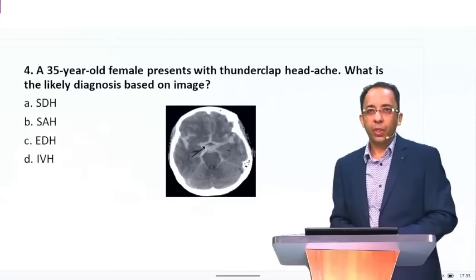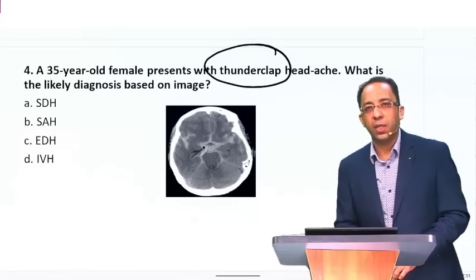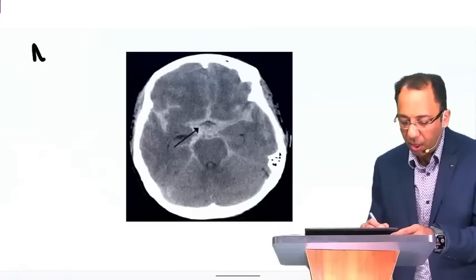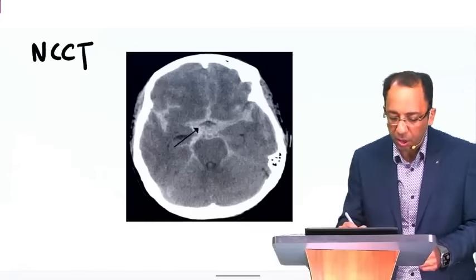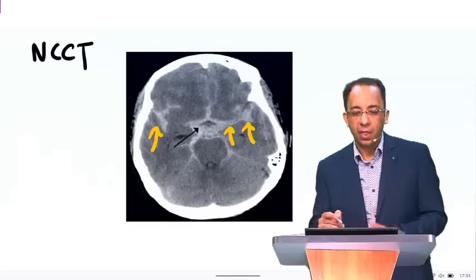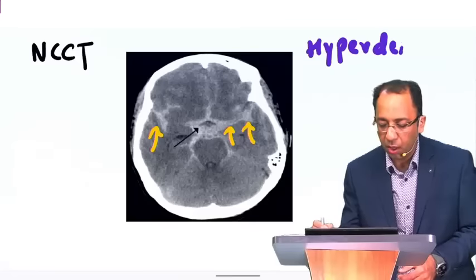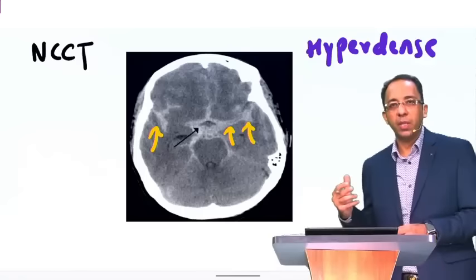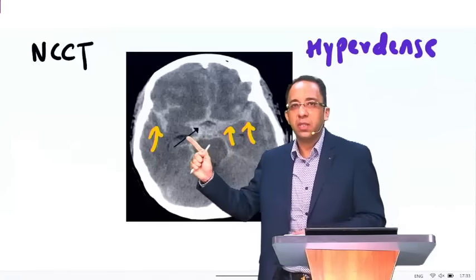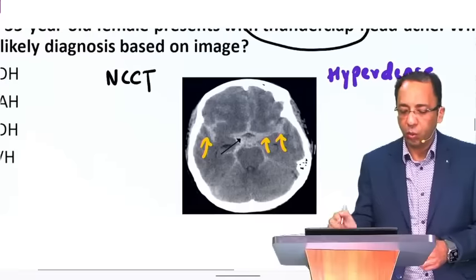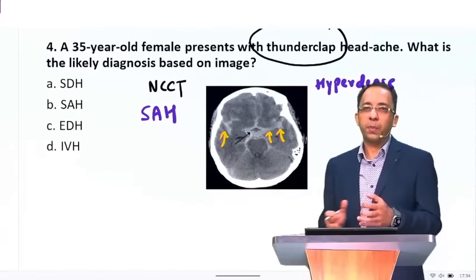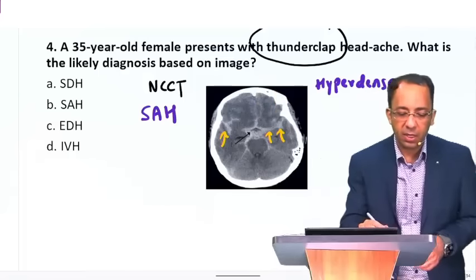A patient comes with a thunderclap headache — they might say worst headache of his life. What is the diagnosis on the image? This is a non-contrast CT head. What you can see here is hyperdensity. We all know acute hemorrhage on a CT scan appears hyperdense — it appears more white. In this image you can see hyperdense blood in the sulcal spaces and in the basal cisterns, pointing towards blood in the subarachnoid space. A patient with subarachnoid hemorrhage typically has a ruptured berry aneurysm. The answer is subarachnoid hemorrhage.